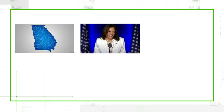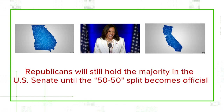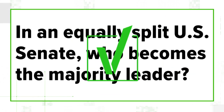But the Senate won't be equally split until after both Georgia Senators are sworn in, Kamala Harris takes office as Vice President, and her replacement is sworn in, meaning Republicans will still hold a majority until that time. So we can verify: there are no official rules determining the majority leader in a split Senate. And according to Audet and our research, Chuck Schumer will likely become the new majority leader.